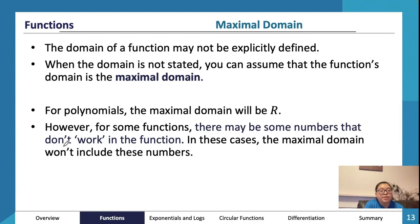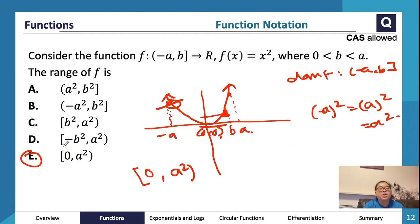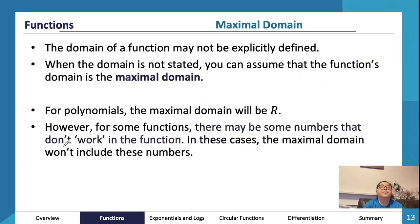Let's talk about maximal domains. We talked about domains before — that's the input of the function. We had a restricted domain before, which was unrestricted because x squared can have any values inputted into it, but we restricted it by specifying a domain. What a maximal domain is: for certain functions they aren't able to take certain values just because of how they're mathematically defined. When the domain is not stated, you can always assume the domain is the maximal domain. For the previous question the domain was stated, so you go with that domain rather than the maximal domain.